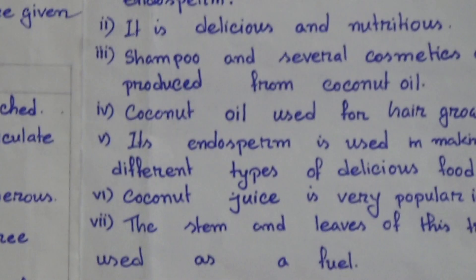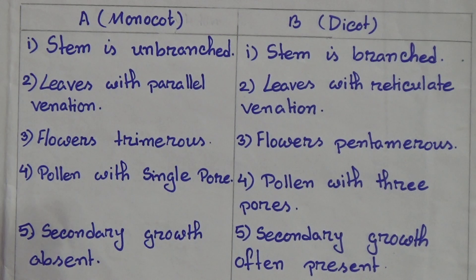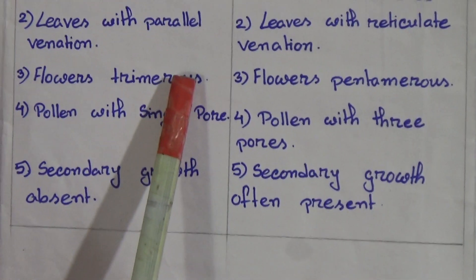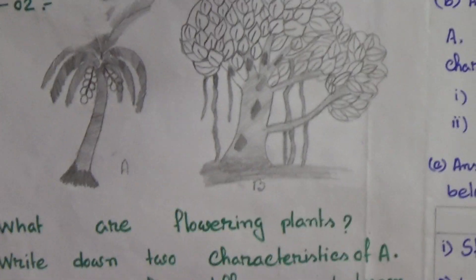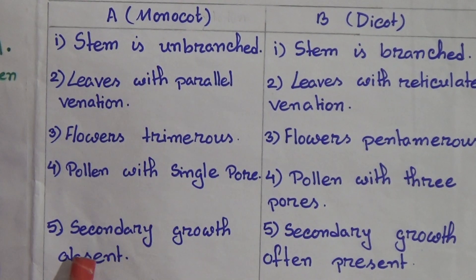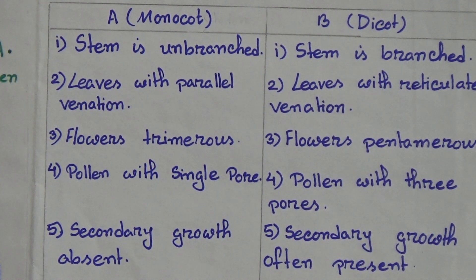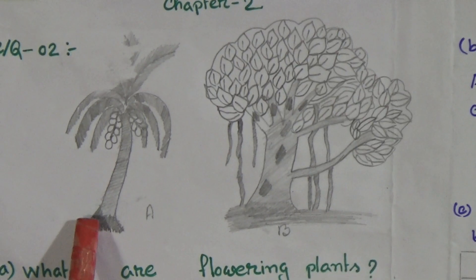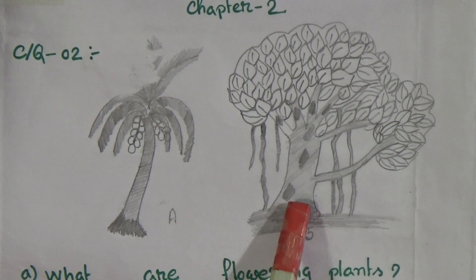Difference two: figure A has leaves with parallel venation, but figure B has leaves with reticulate venation. Difference three: flowers in A are trimerous (three petals) and in B are pentamerous (five petals). Difference four: pollen with a single pore versus pollen with three pores. Difference five: secondary growth is absent in coconut tree but often present in banyan tree. Secondary growth means growth in width.